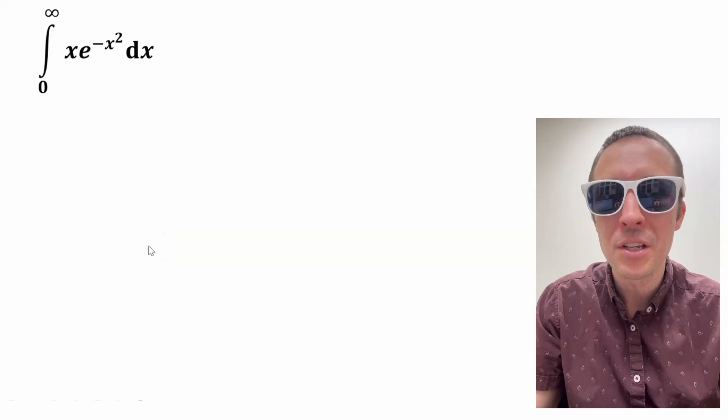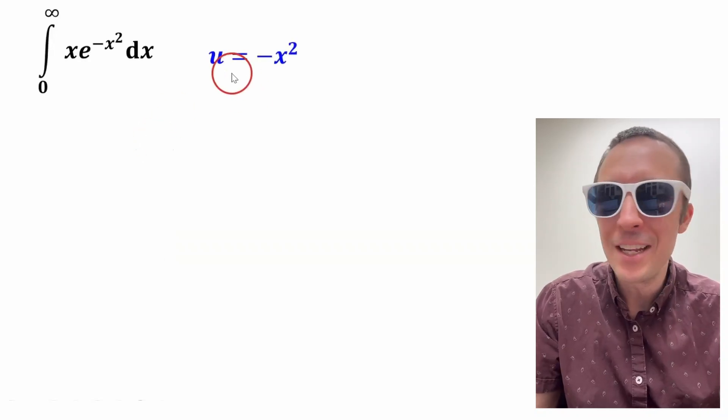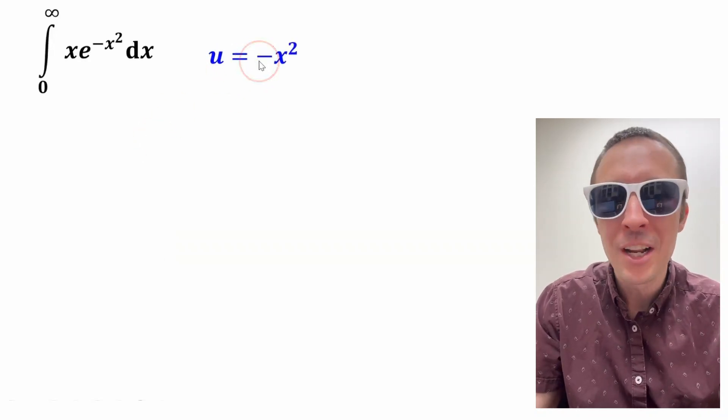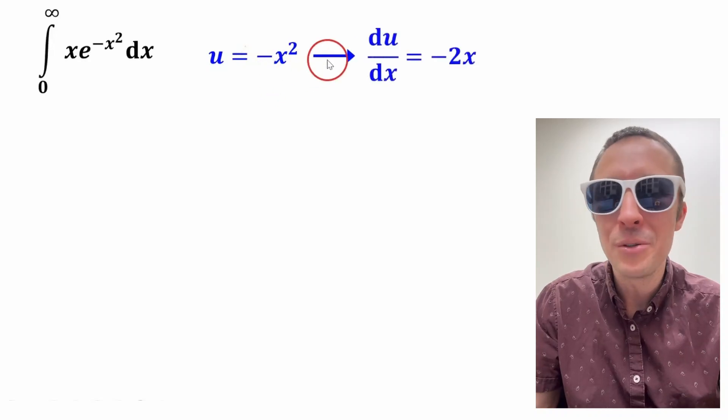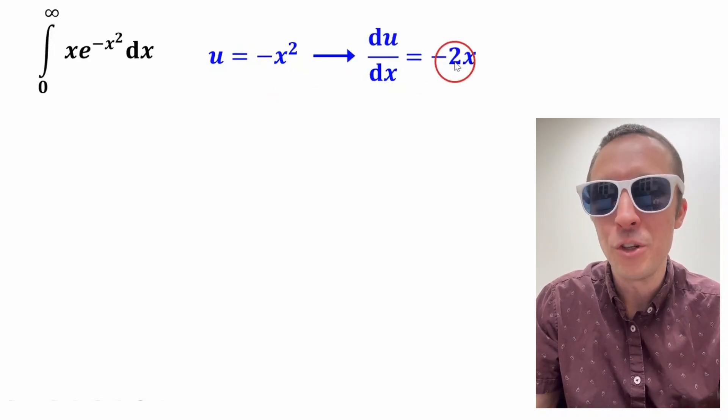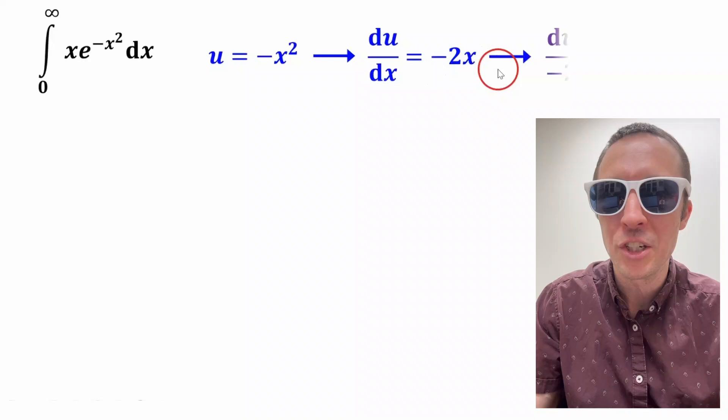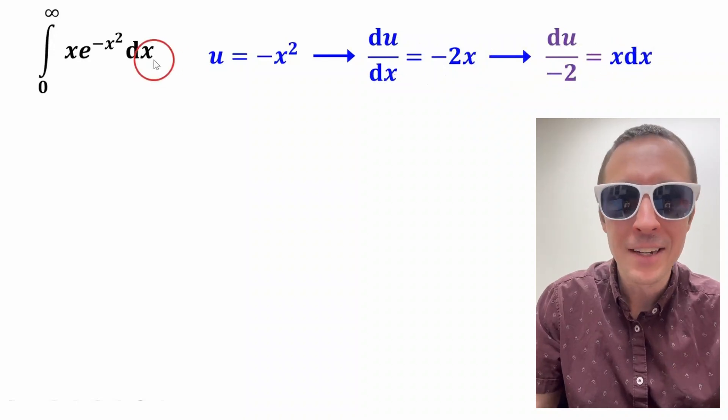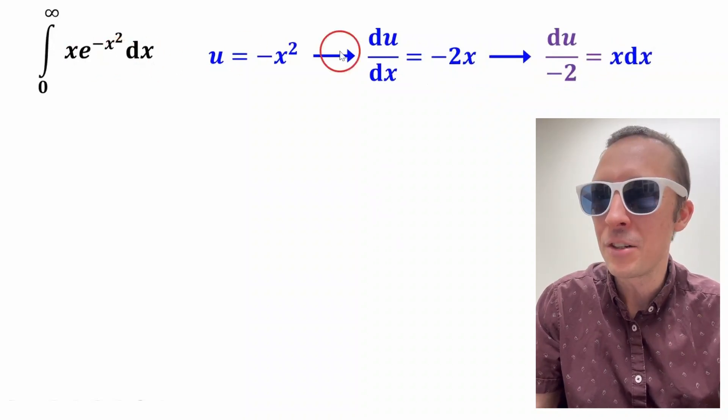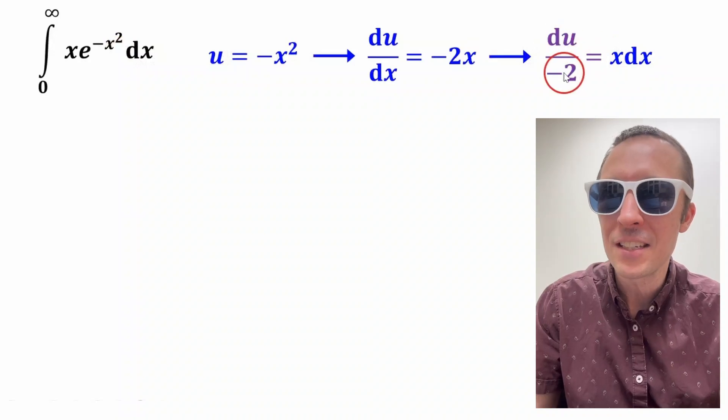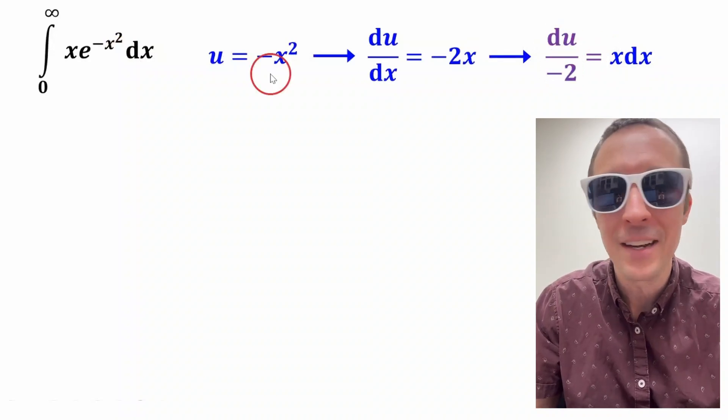We're going to do this using a u substitution where we'll set u equal to negative x squared. And if we take the derivative, du dx equals negative 2x. Now if we rearrange this equation to solve for x dx, because we have x dx right here, x dx equals du divided by negative 2.